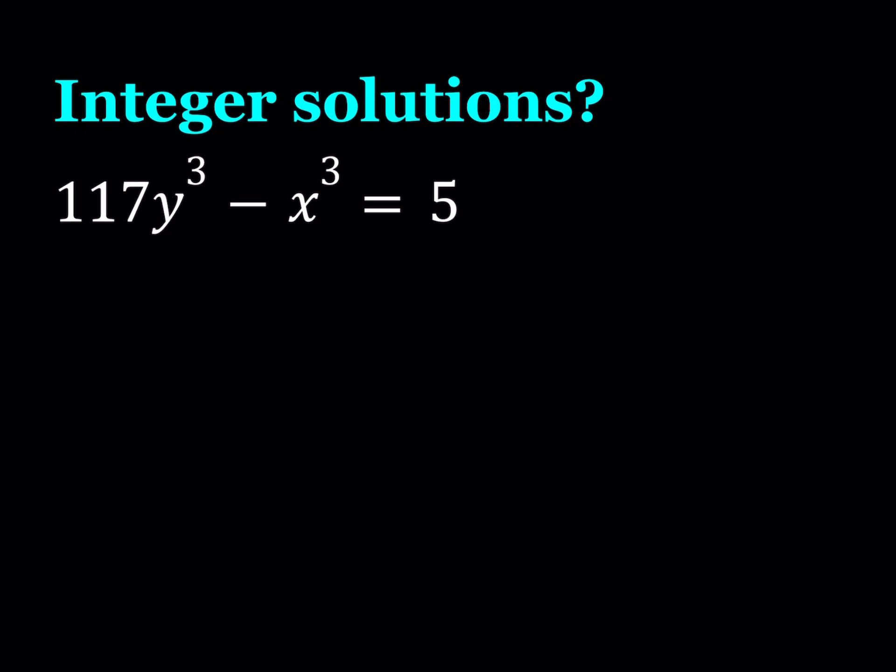And, also as promised, I'm going to be sharing with you a related problem, or a variant of this problem, which is also very interesting. So, let's get started. We have 117y³ - x³ = 5, and x and y are integers.